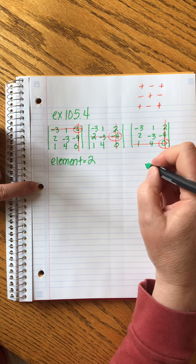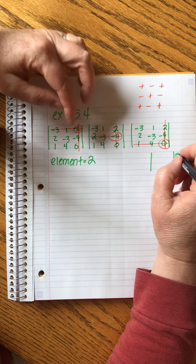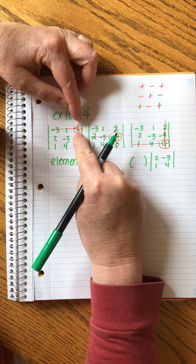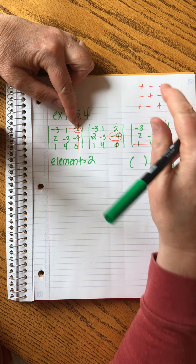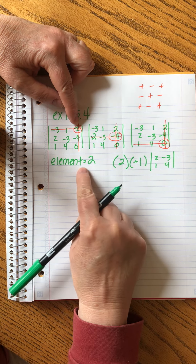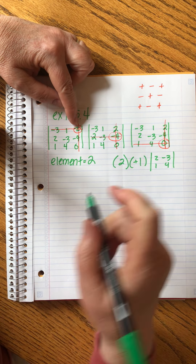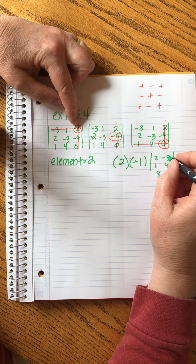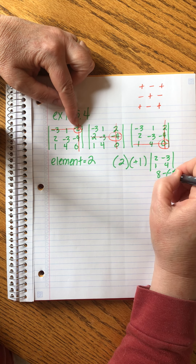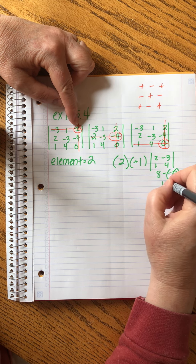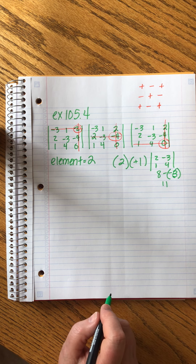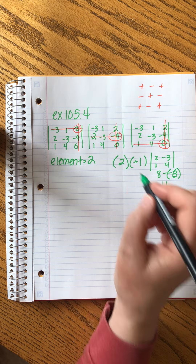We remember we're making a three-part package for each element. The first element is 2. We create the minor — whatever we didn't cross out: 2, 1, minus 3, 4. We choose the sign that corresponds off the checkerboard — I like to write it with a 1. Then we multiply by the element itself, which is 2. Solving: 2 times 4 is 8, and 1 times minus 3 is minus 3, but we're subtracting so that becomes positive 11. Multiplied by 2, we get 22.